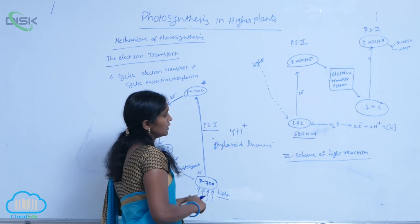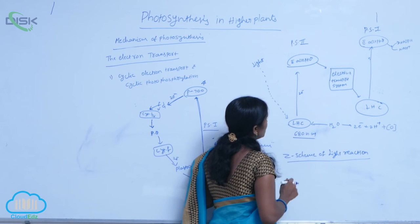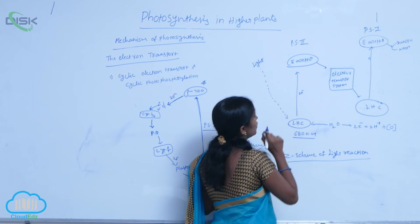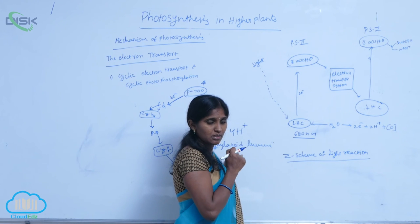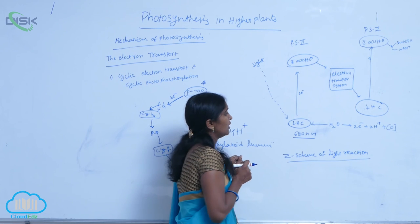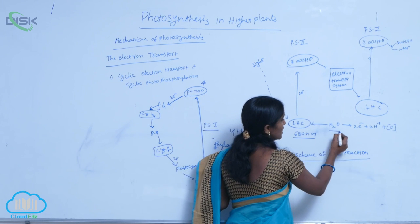During electron transport, the reaction center of PS2 is oxidized. To compensate for the loss of two electrons, water molecules are split.